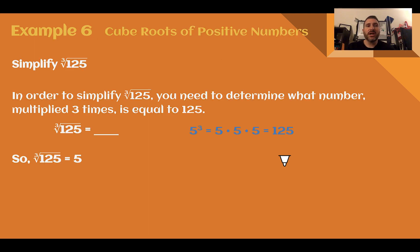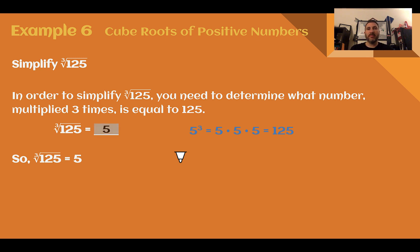Example 6, cube roots of positive numbers. Simplify the cube root of 125. We have to figure out what number multiplied by the same number by the same number equals 125. That must be 5: 5 times 5 is 25, times 5 again is 125. So the cube root of 125 is 5.